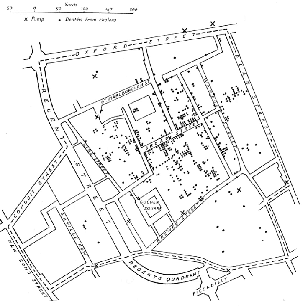Spatial stochastic processes, such as Gaussian processes, are also increasingly being deployed in spatial regression analysis. Model-based versions of GWR, known as spatially varying coefficient models, have been applied to conduct Bayesian inference. Spatial stochastic processes can become computationally effective and scalable Gaussian process models, such as Gaussian predictive processes and nearest-neighbor Gaussian processes.